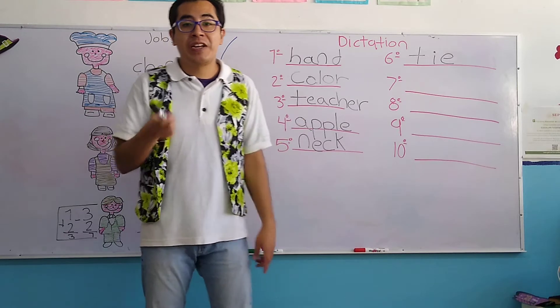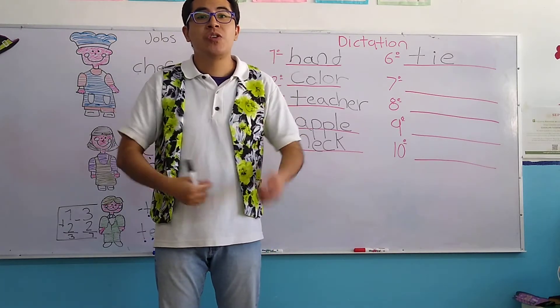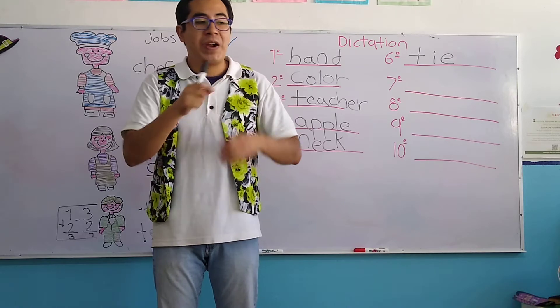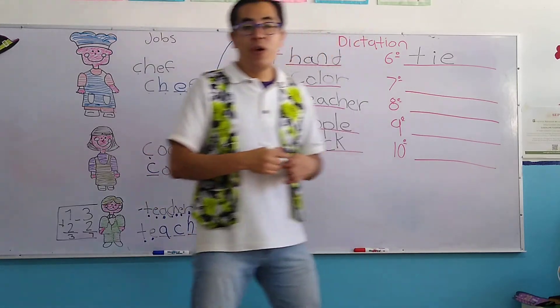Now, don't forget the tie. It's an object that the boys use so we can look elegant. This is a tie. Okay? Very good. The seventh word.